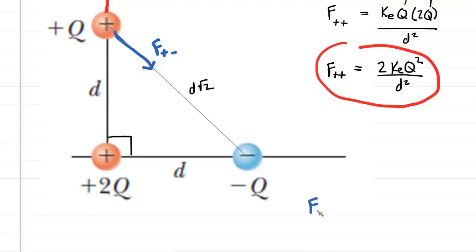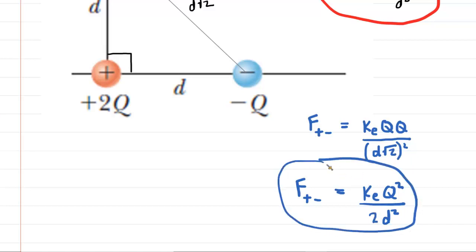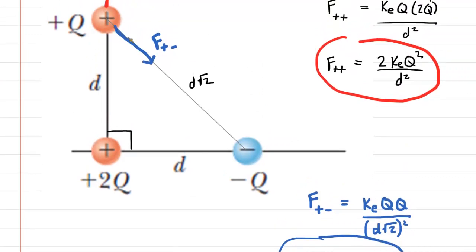We'll use Coulomb's Law again to find F(positive, negative). That equals k_e times Q times Q — notice that even though the charge is negative, we only put in the magnitude, so it's still Q — divided by the distance squared. That distance is d√2, so we square d√2. Simplifying: the numerator gives k_e Q², the denominator gives d² times (√2)² = 2d². So F(positive, negative) = k_e Q² / (2d²).